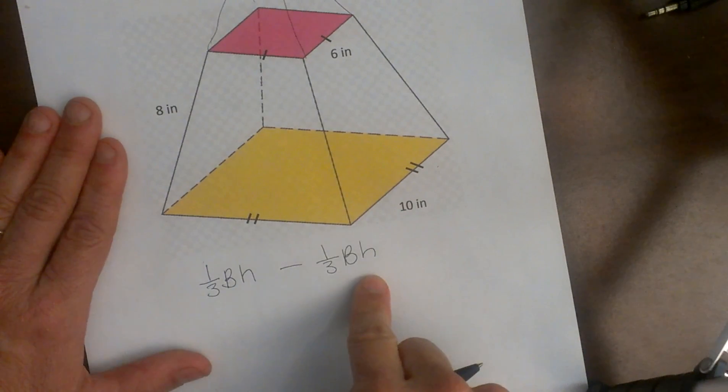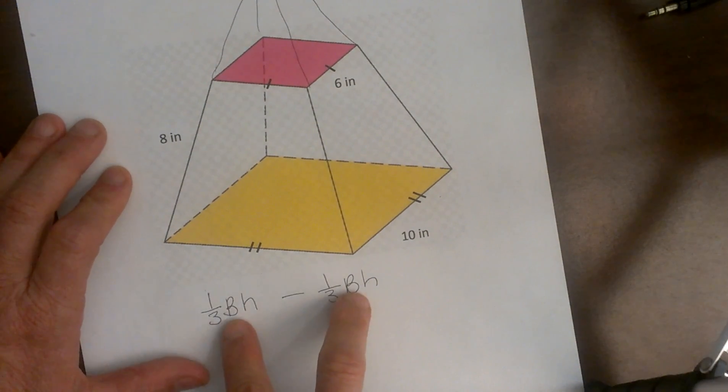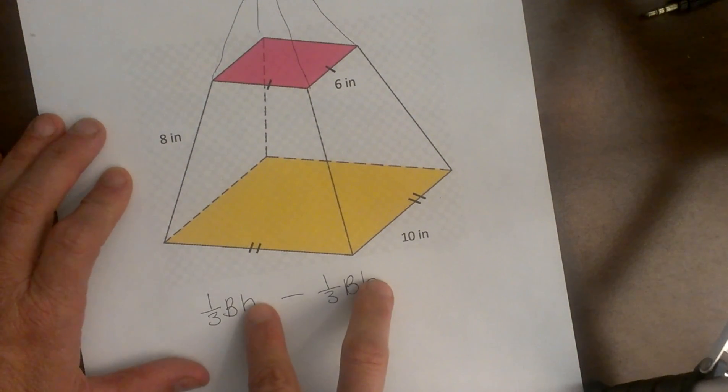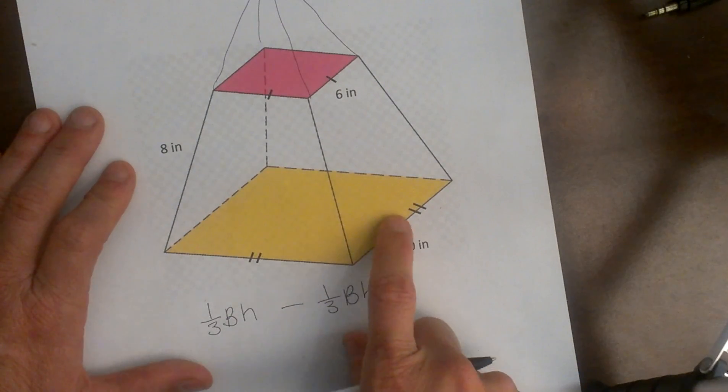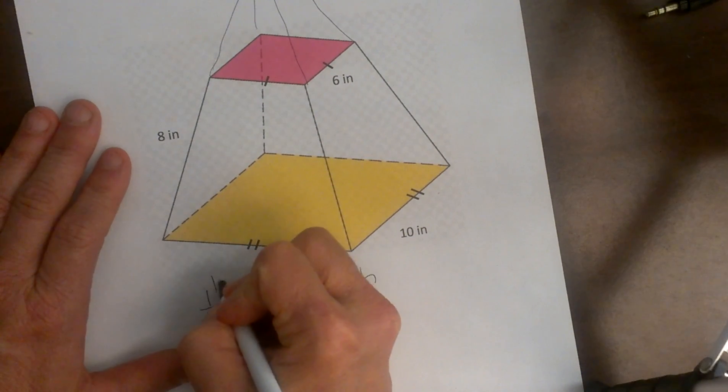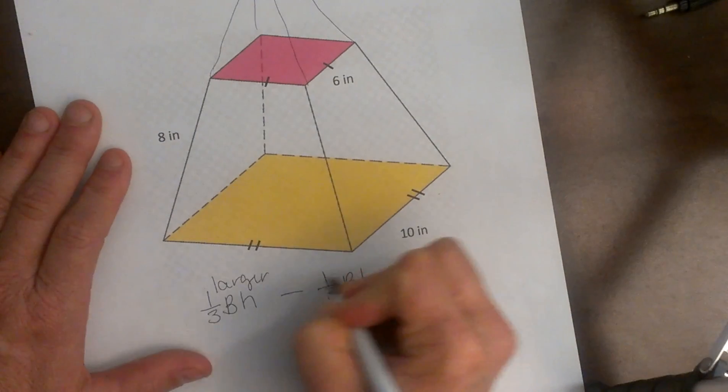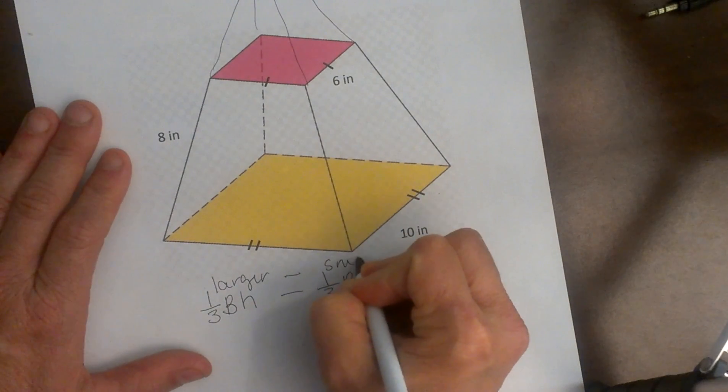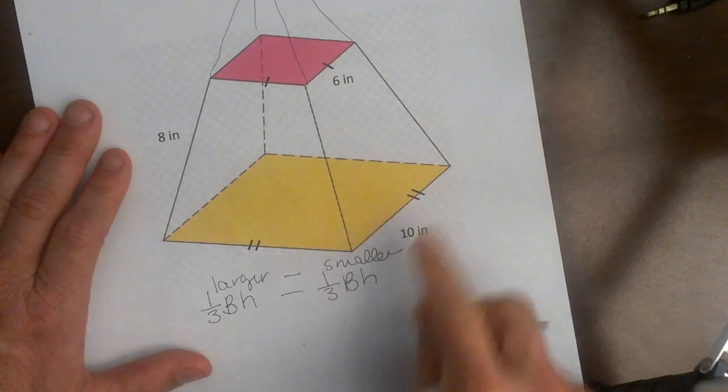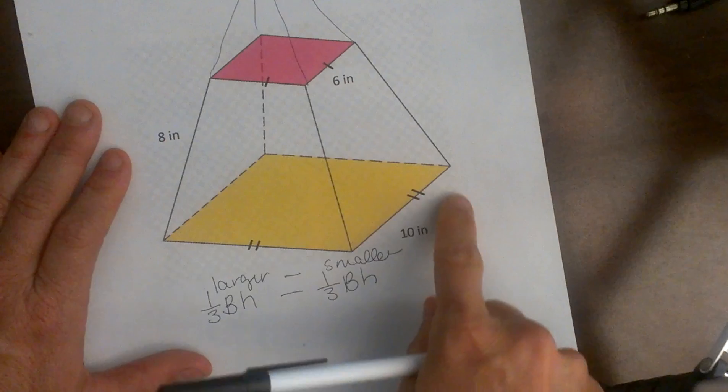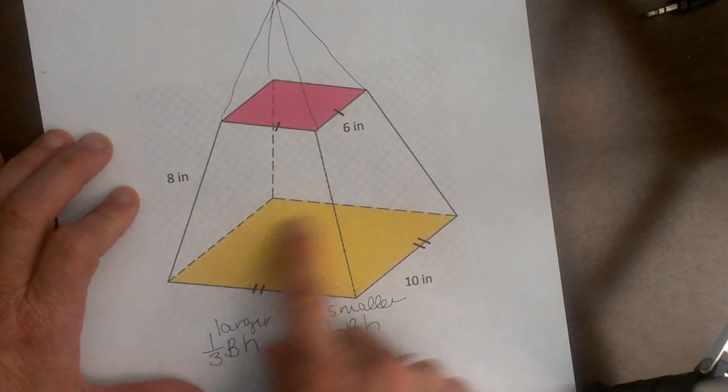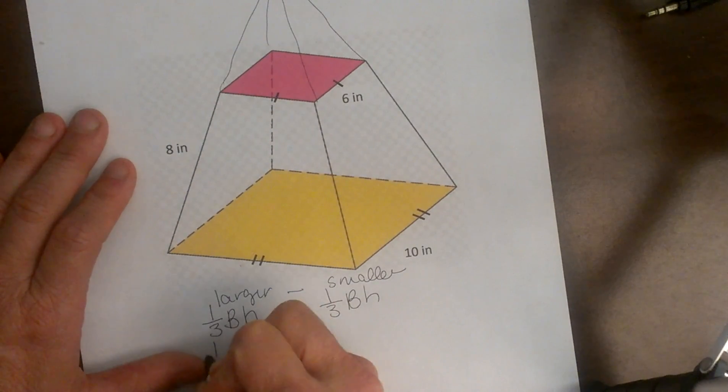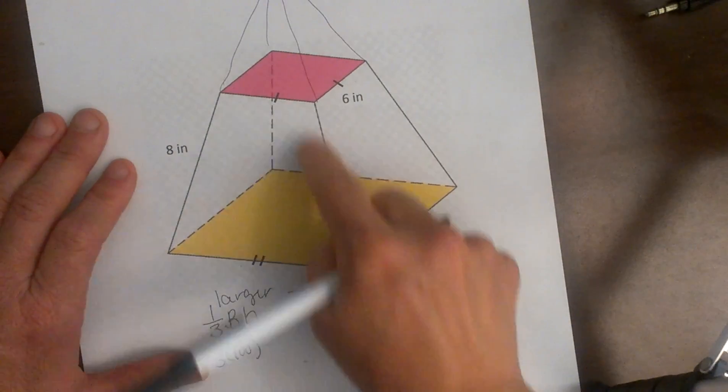So I am subtracting the formulas but the difference is going to be my base area is going to be different, my height is going to be different. Well I can just look at this figure and figure out the base area of the larger one. I am going to subtract the smaller one or the parts chopped off the top. Well the volume of the large one is pretty easy. I can see that my base is ten by ten. So the area of my base is one hundred. So one third of one hundred times my height.